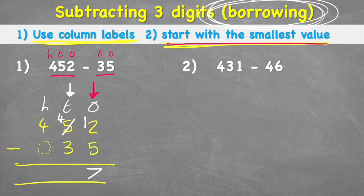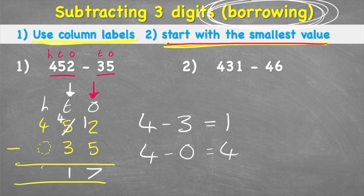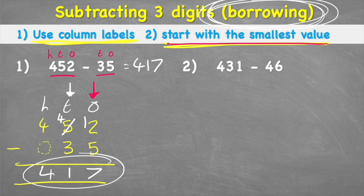Now looking at the next column: four subtract three equals one. Then my last column says four subtract zero, which equals four. So the answer to 452 subtract 35 is 417.